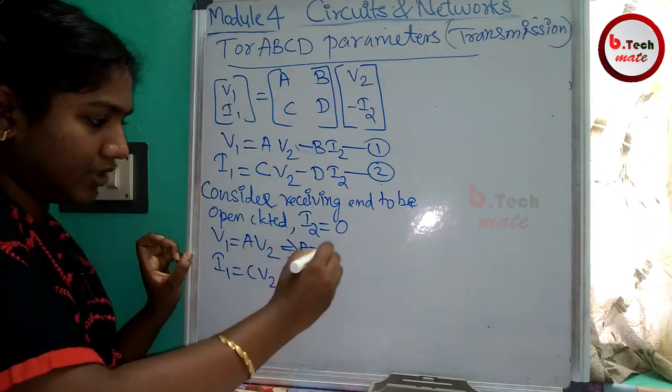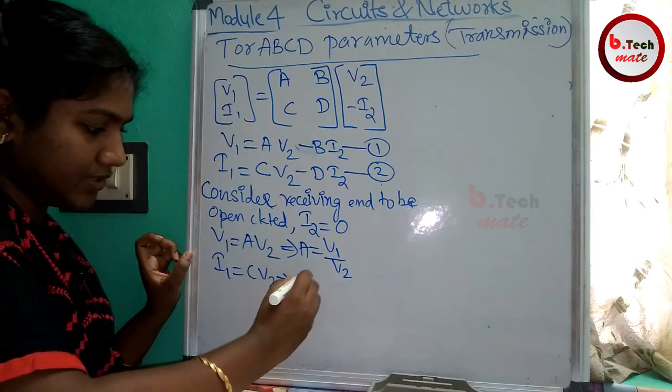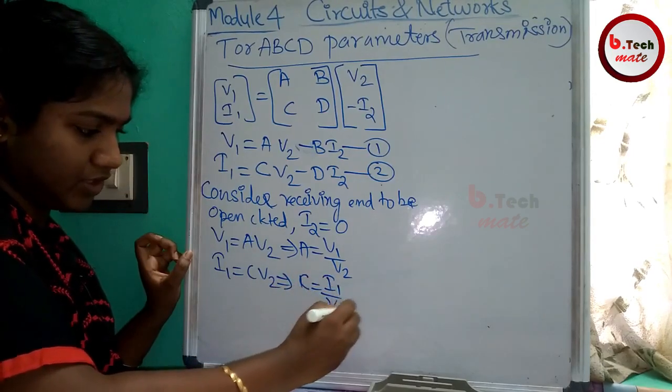That is, A is V1 by V2. Here, C is I1 by V2.